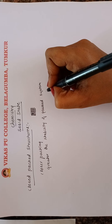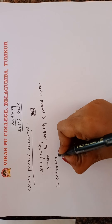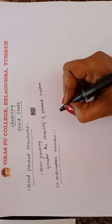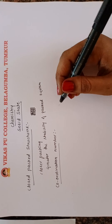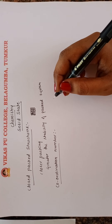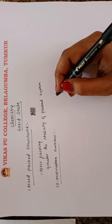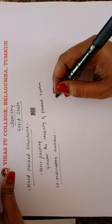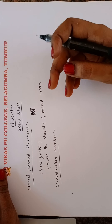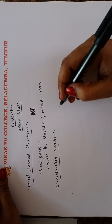Now we are going to be discussing about the coordination number. The coordination number means the number of neighbouring particles for one particle in a crystal. That is, the number of particles adjacent to each particle in a crystal is called the coordination number. If one particle is surrounded by four neighbouring particles, the coordination number is four; if surrounded by six, the coordination number is six.